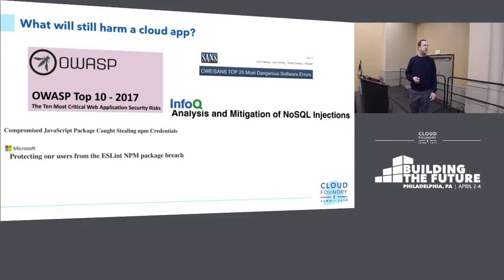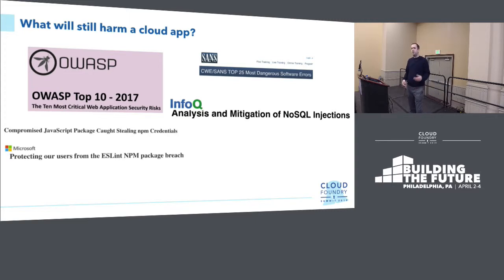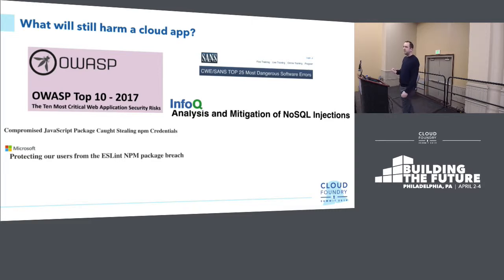There's an example here like 'compromised JavaScript package caught stealing NPM credentials.' This has happened to NPM a couple of times where somebody takes over an existing module, puts in their bad code, and everybody downloads and runs it. All of a sudden they're executing exploits. The faster you can execute your Node code, the faster you can execute your exploits — so if you only focus on performance and not security, you really just end up getting hurt faster.